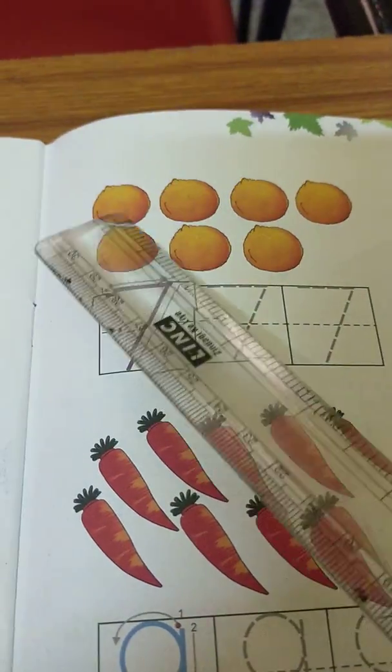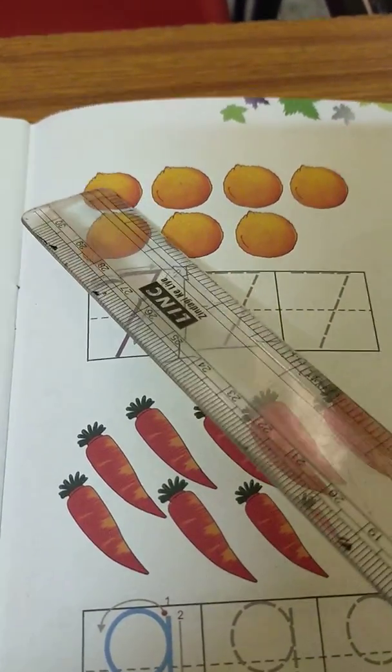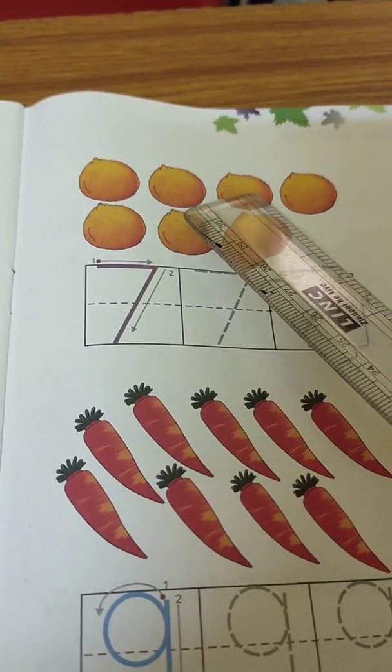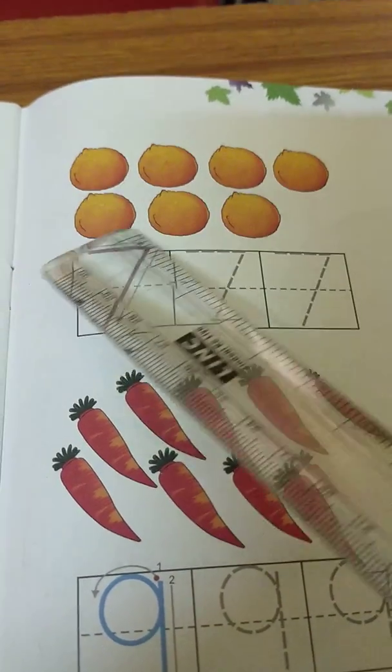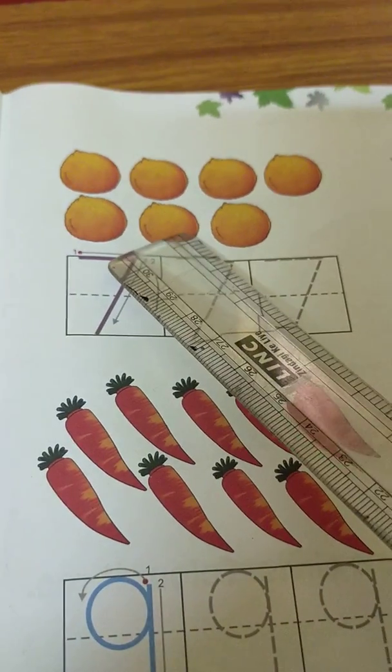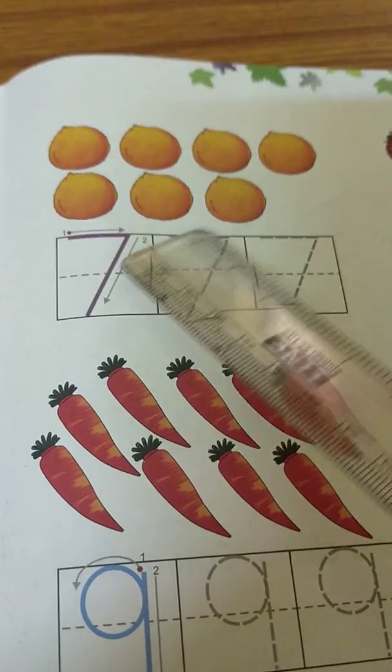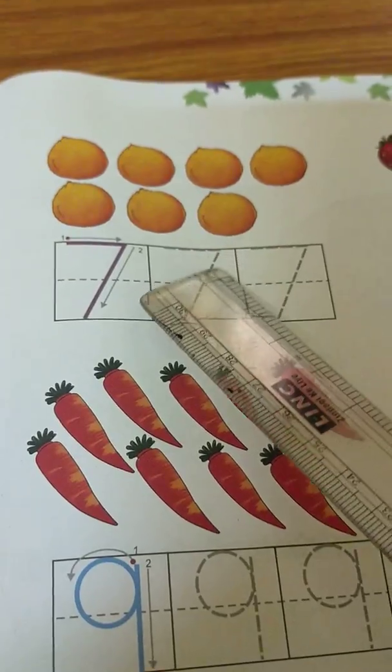How many oranges? Count. One, two, three, four, five, six, seven. So here I write, seven.